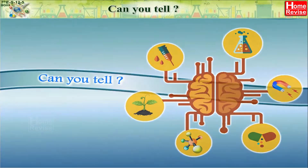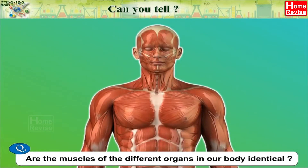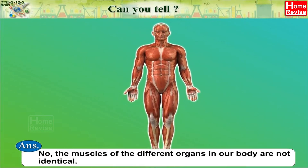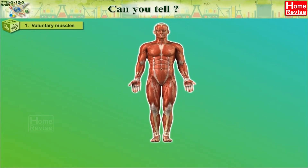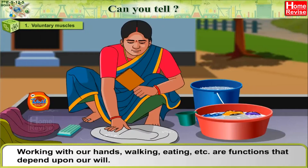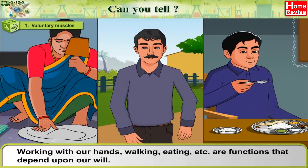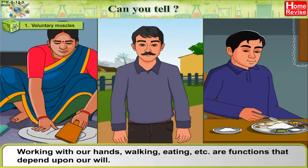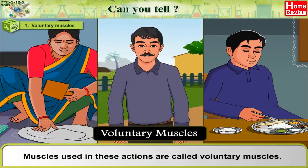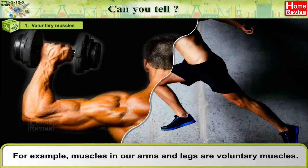Are the muscles of the different organs in our body identical? No, the muscles of the different organs in our body are not identical. 1. Voluntary muscles: Working with our hands, walking, eating, etc. are functions that depend upon our will. Muscles used in these actions are called voluntary muscles. For example, muscles in our arms and legs are voluntary muscles.